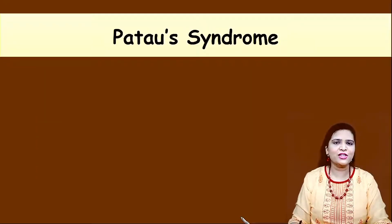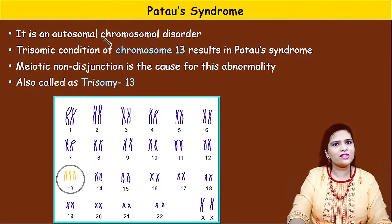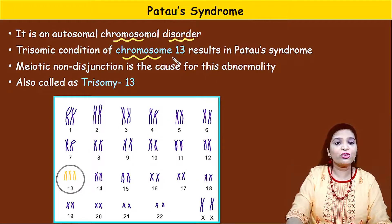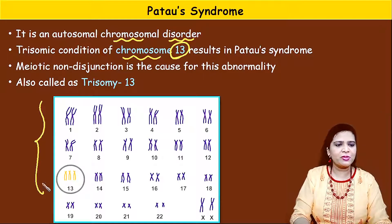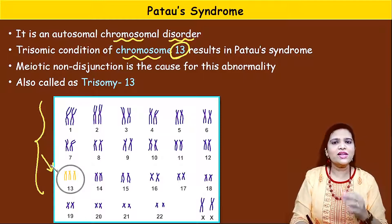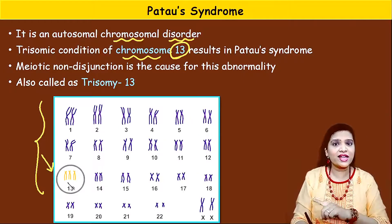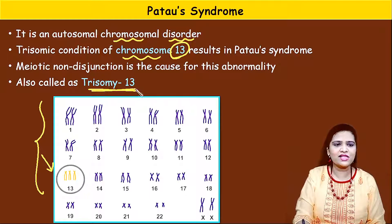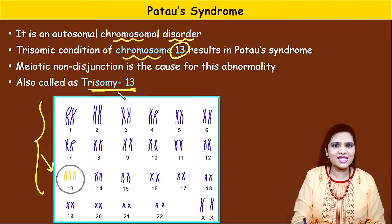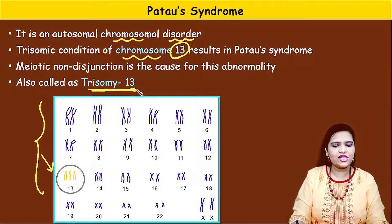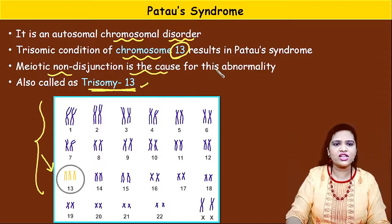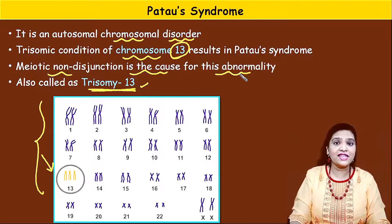Let's move on to the second syndrome — Patau syndrome. Patau syndrome is also an autosomal chromosomal disorder. This is due to a problem in chromosome number 13. Looking at the karyotype at the 13th chromosome, instead of being two copies, there is one more extra copy — three copies are present at chromosome number 13. That's why Patau syndrome is called trisomy 13. This also occurs due to meiotic non-disjunction during cell division.